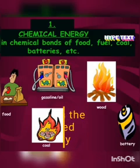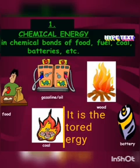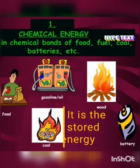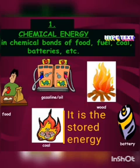This is chemical energy. Chemical energy is the energy that is stored, and when it is used or broken, the energy is released. Such energy includes the chemical in the food we eat, the chemical in fuel, the chemical in coal, the chemical in battery, and so on.